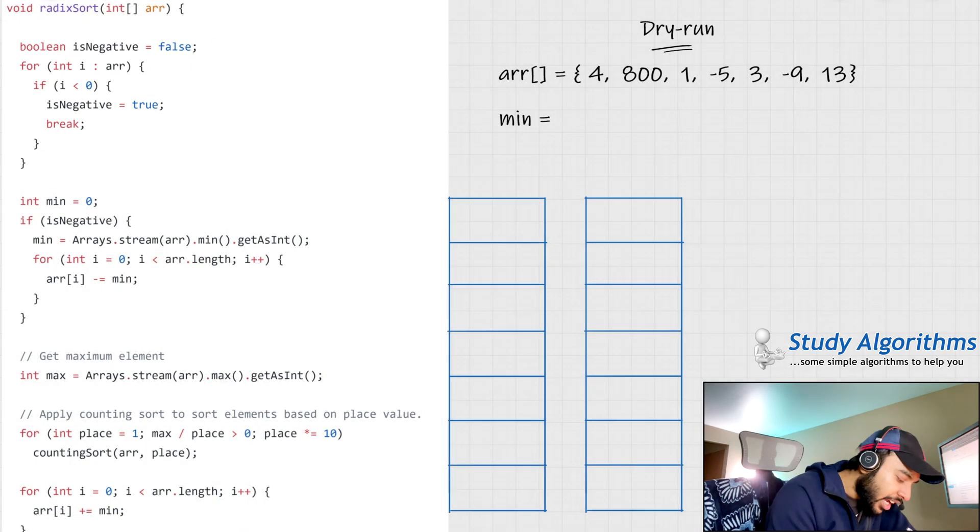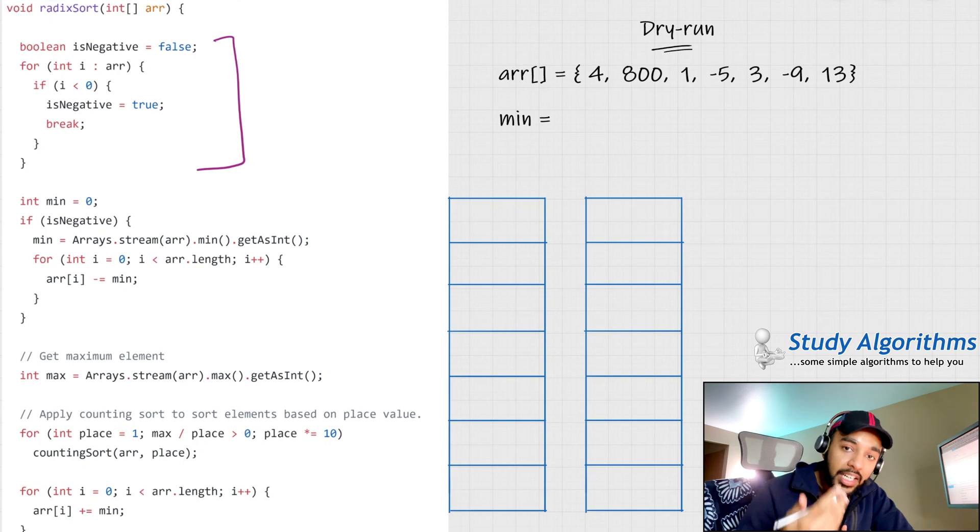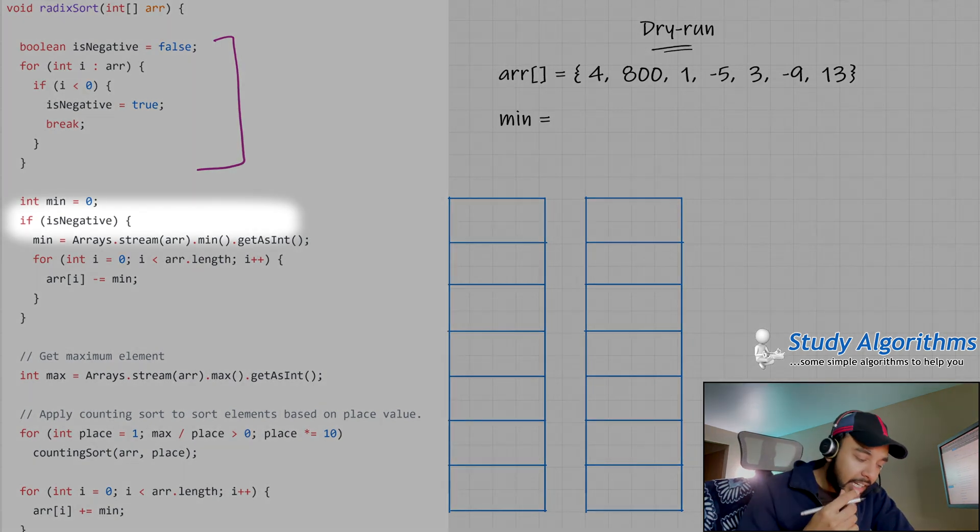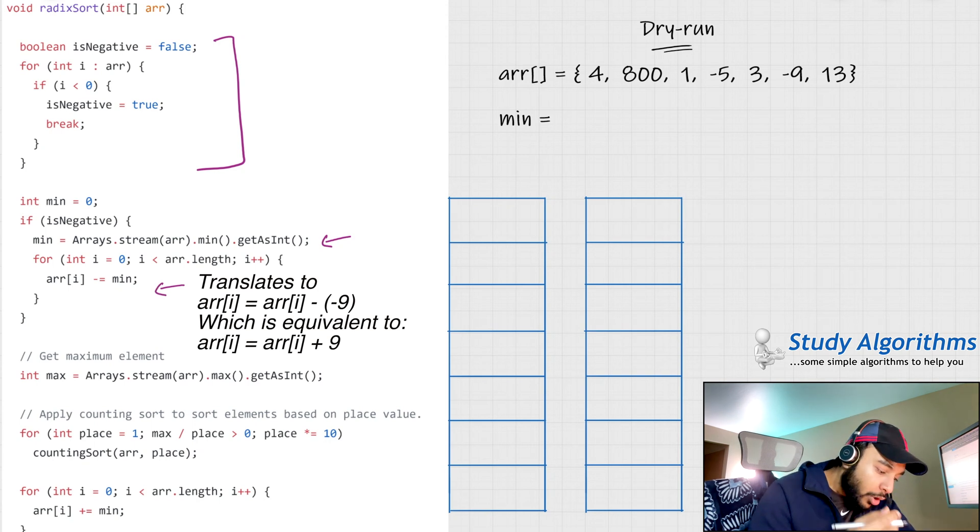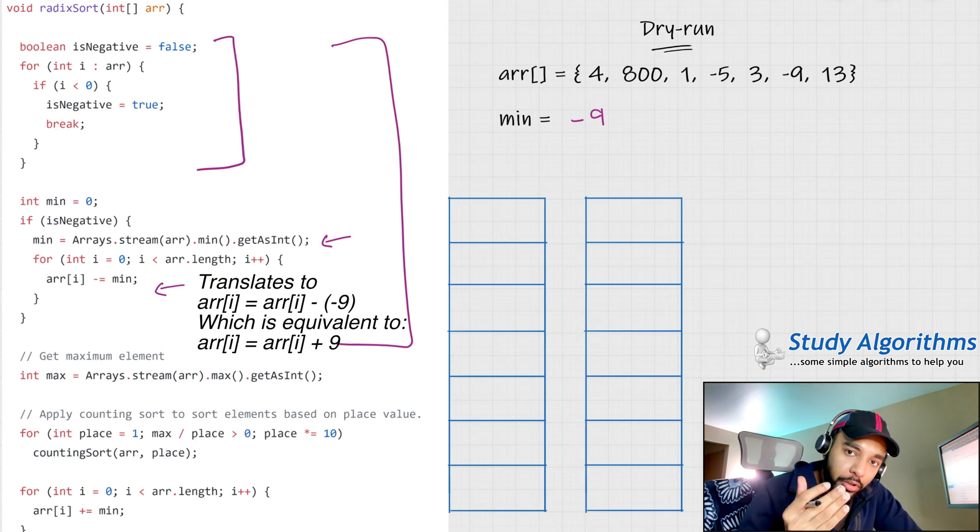In our first condition, we check if your array has any negative numbers. If you find any negative number, what you can do is you can find the minimum number that you found in the array. And then what you can do is you can add this minimum number to each of the elements in the array. So, once this piece of code executes, what would happen is you find out the minimum number in the array is minus 9, right? What you do is you simply add 9 to all of these elements. What would this change your array to?